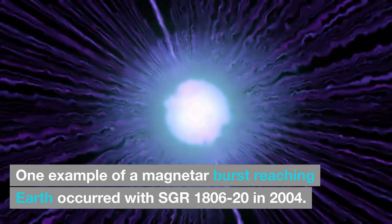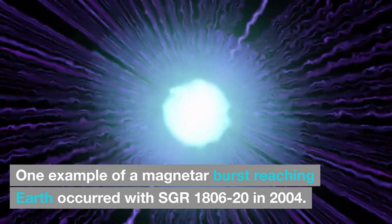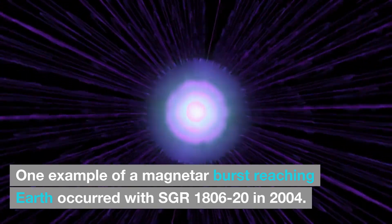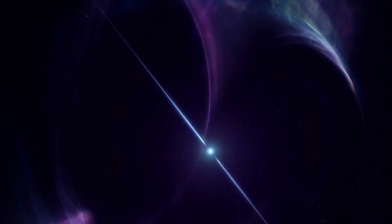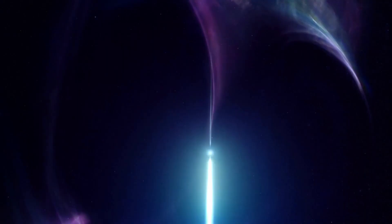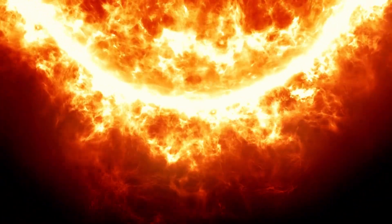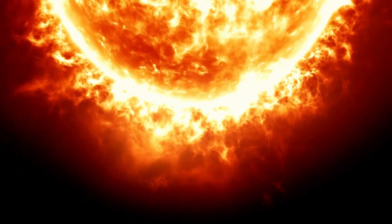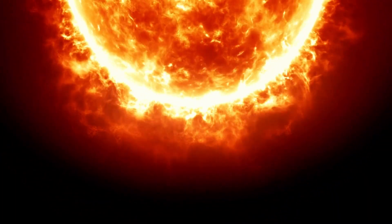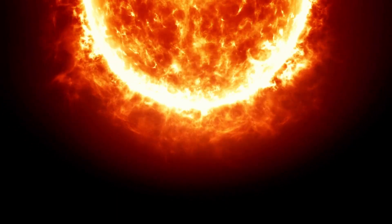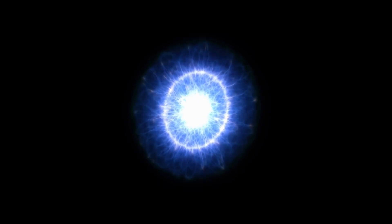One example of a magnetar burst reaching Earth occurred with SGR 1806-20 in 2004. The distance from our planet to this neutron star is about 50,000 light-years. So, it emitted a colossal burst of gamma-ray radiation, equivalent to 300,000 years of the Sun's energy production, in just near 0.2 seconds.